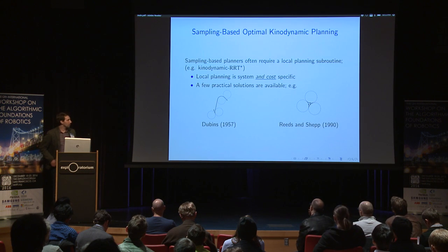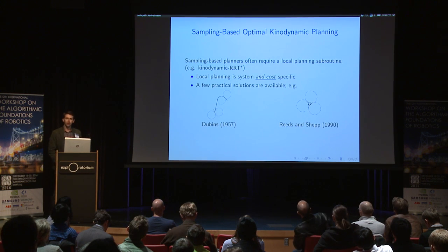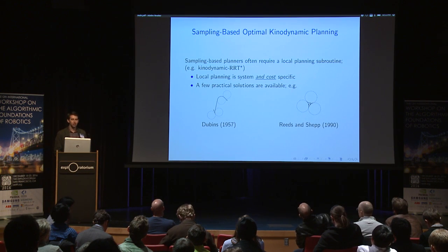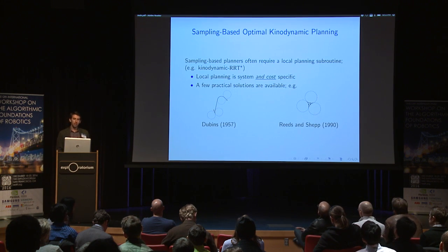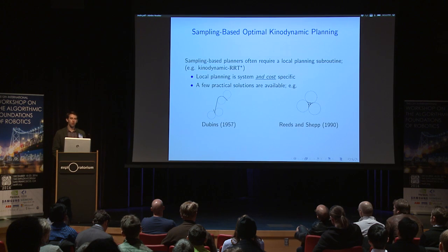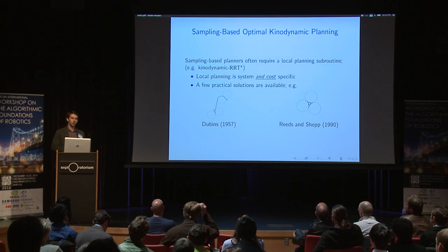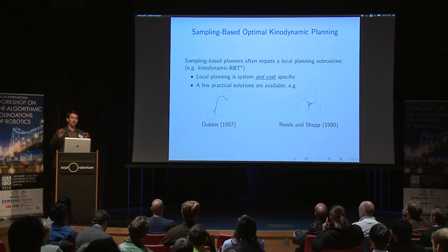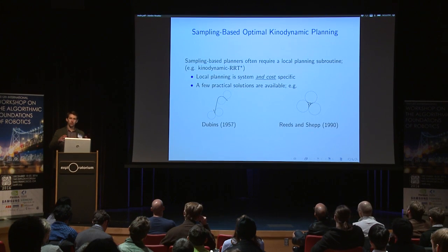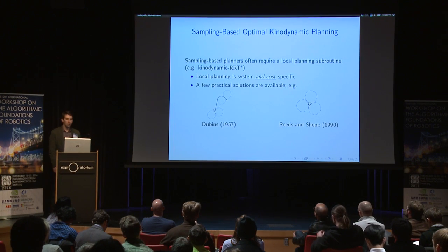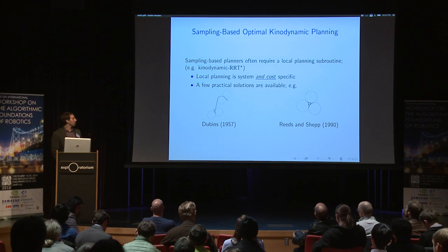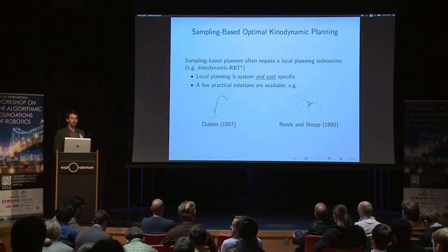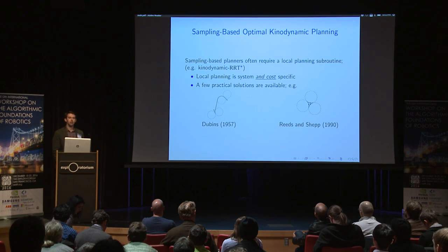This audience is probably in agreement that sampling-based planners are among the best techniques available for motion planning, but when it comes to optimal kinodynamic planning, many methods require a local planning subroutine to connect sampled states with the optimal trajectory between those two states. This local planning subroutine is system and cost-specific, which means we really only have a handful of practical solutions for this local planning problem available in closed form.